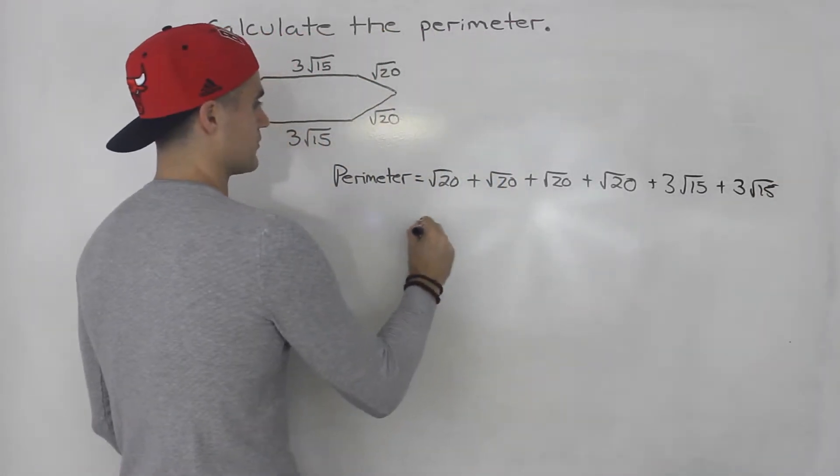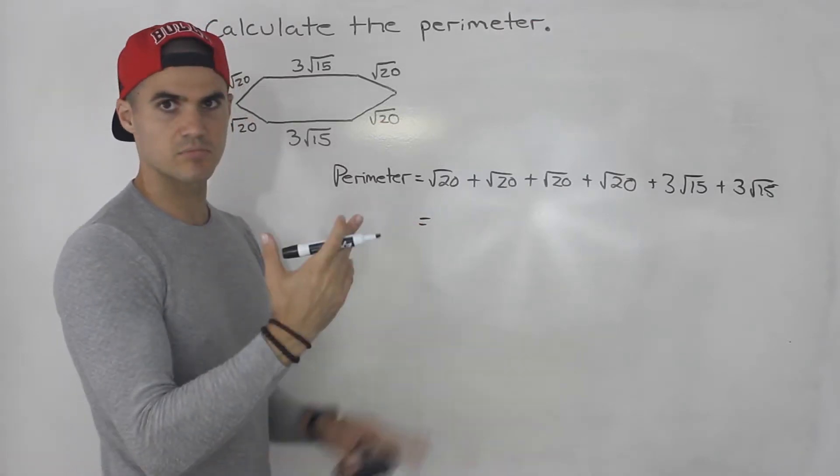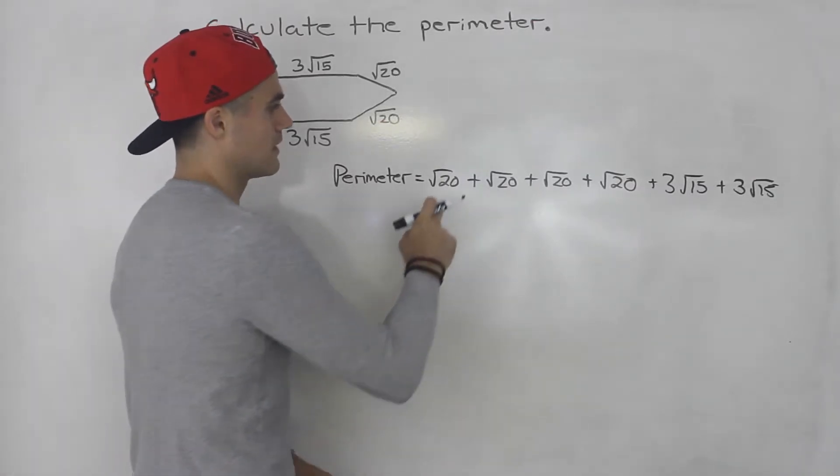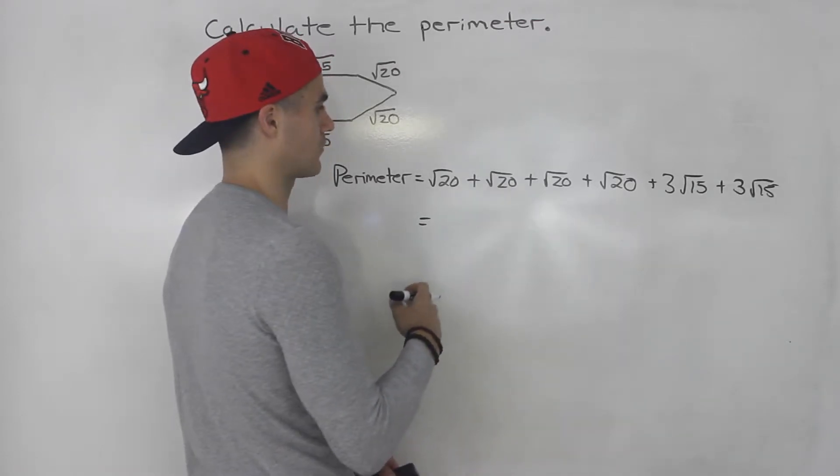Now from here to simplify this, there's multiple things you could do. The root 20, you can simplify that radical. But before simplifying it, I would actually collect like terms first and then simplify any remaining radicals.